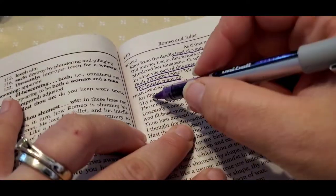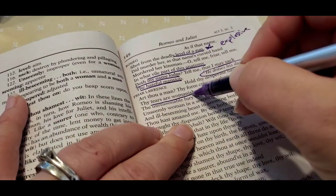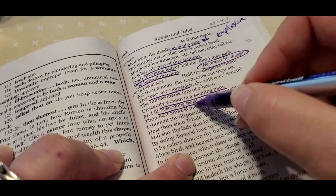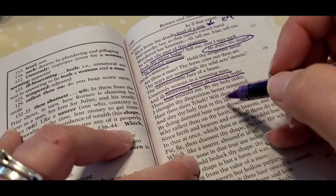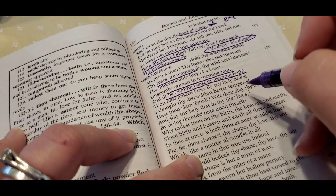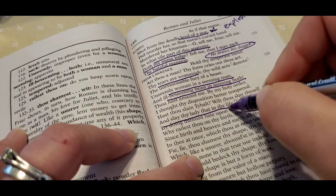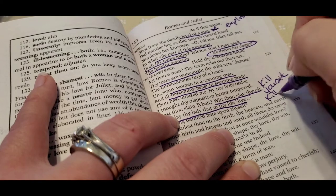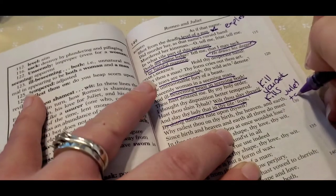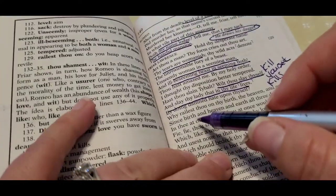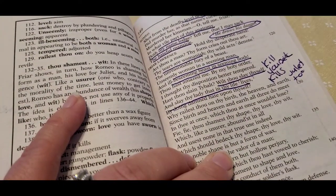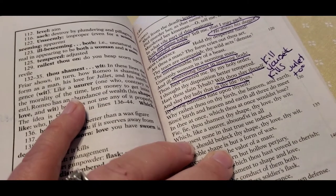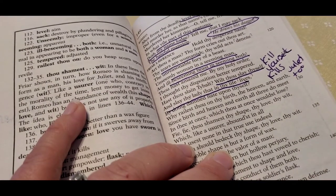And he says, hold your desperate hand. Are you a man? Your tears are womanish. They are wild acts and unreasonable fury beast, unseemingly woman and a seeming man, ill seeming beast and seeming both. And he says, you've amazed me by holy order. I thought you have disposition better tempered. How did you slay Tybalt? Would you slay yourself and slay thy lady in my life? So if you kill yourself, it kills Juliet too.